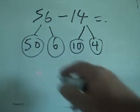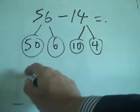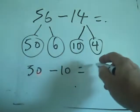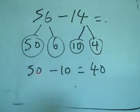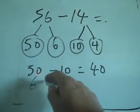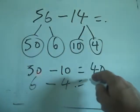And now all we have to do is to take our 50, our first one, and our 10, take them away from each other, which gives me 40. I take my 6 and my 4, take them away from each other, which gives me 2.